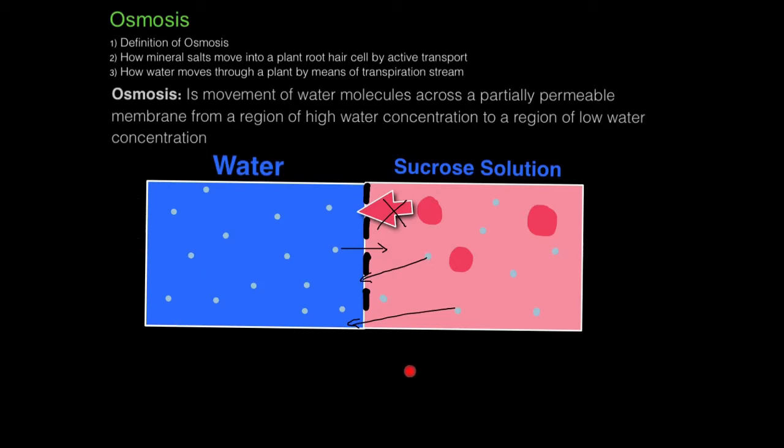This diagram shows the process of osmosis. The water side represents the region of high water concentration, and the sucrose solution represents the region of low water concentration.